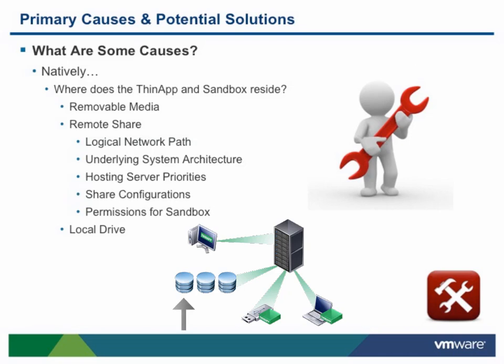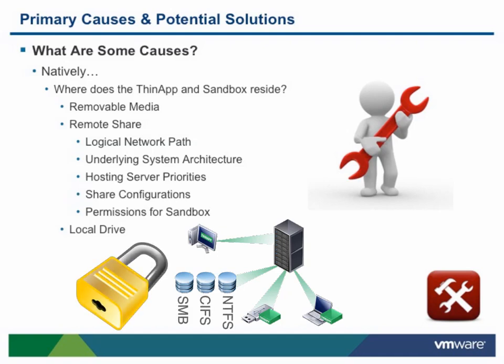This might mean selecting a server which has a lesser load to host your ThinApp packages, or setting up some sort of distributed file system or remote share replication so users don't all hit one specific server, ultimately creating a choke point for your network environment. Additionally, it is important to note how the server share is configured. While not directly specific to performance, it is still important to ensure the remote system share settings — whether SMB, CIFS, or NTFS — are not too limiting for users.